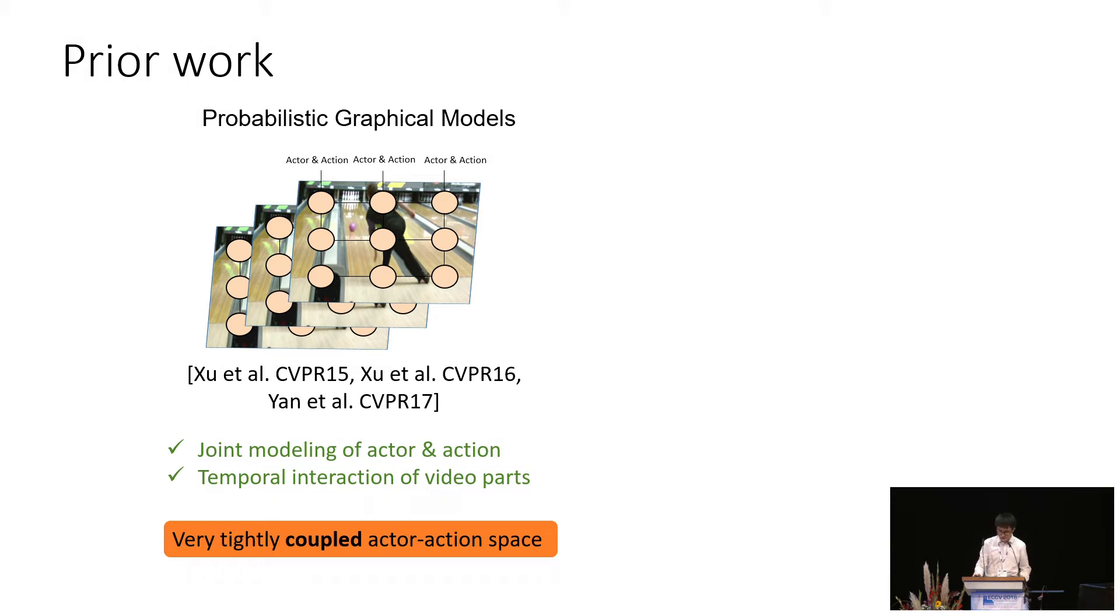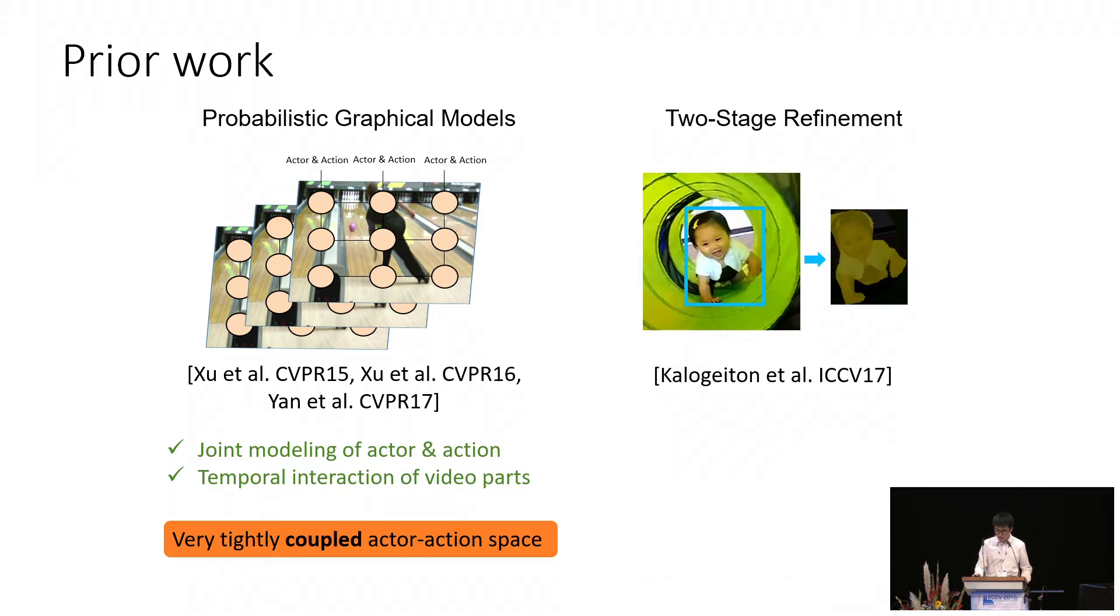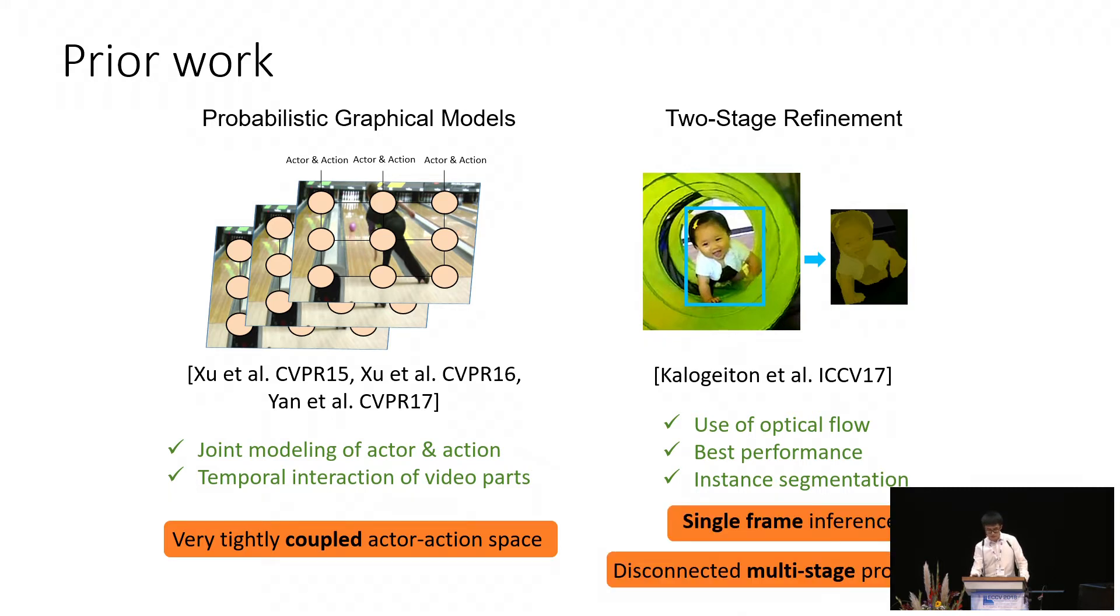A second category utilizes a two-stage refinement strategy. It first performs action spatial localization in the video, and then a segmentation step is applied within the bounding boxes. There are several pros of them. First, they used the optical flow, and second, they achieved the state-of-the-art performance. Third, they did instance segmentation beyond just semantic segmentation. Still, there are some limitations as well. First, they did single-frame inference, and second, the disconnected multi-stage processing is suboptimal.